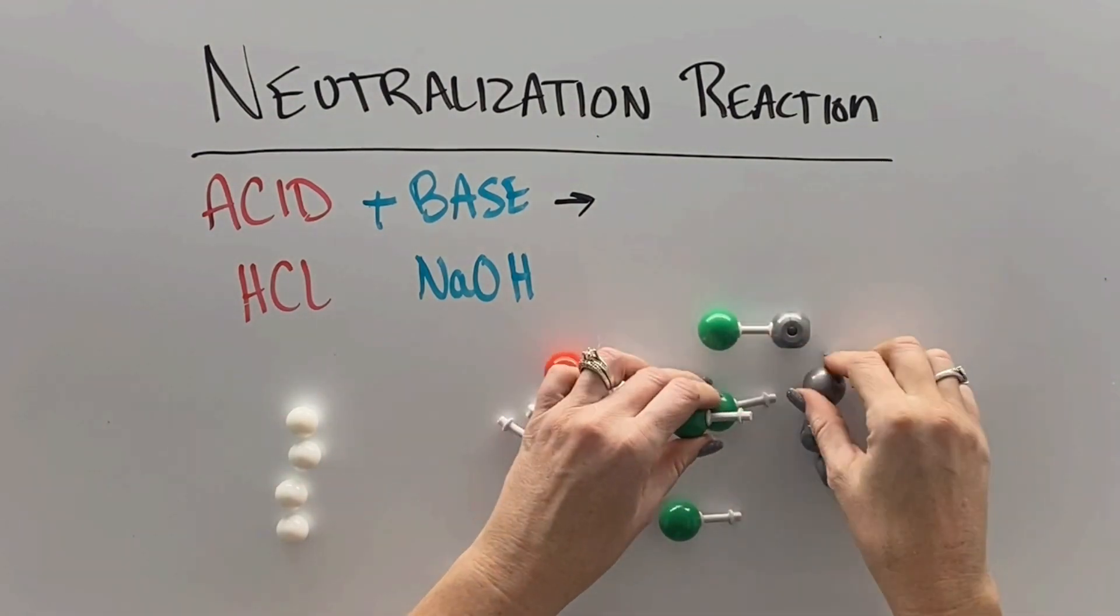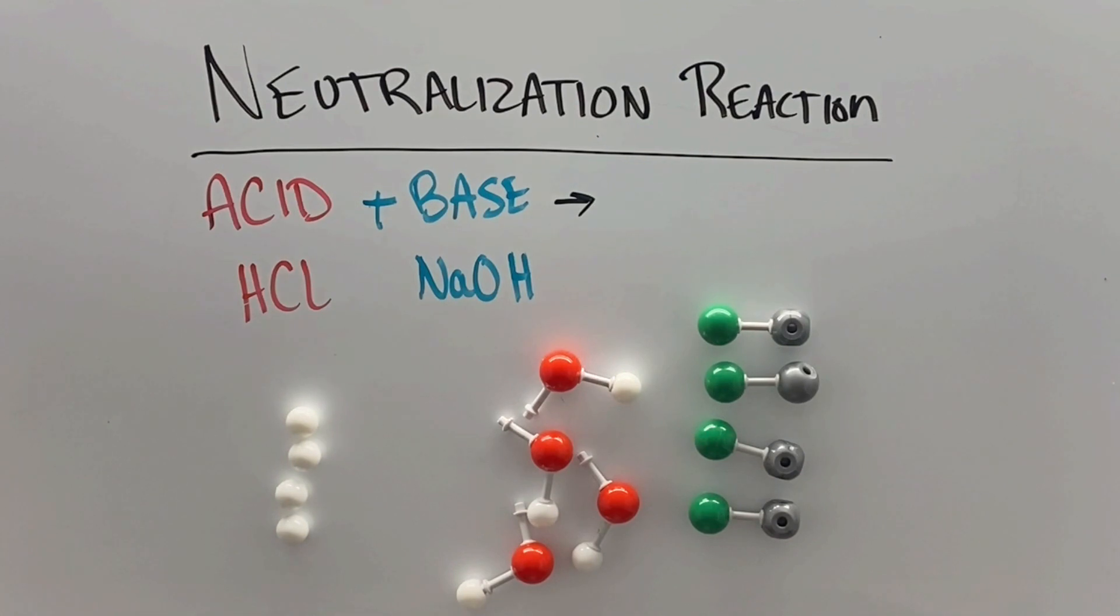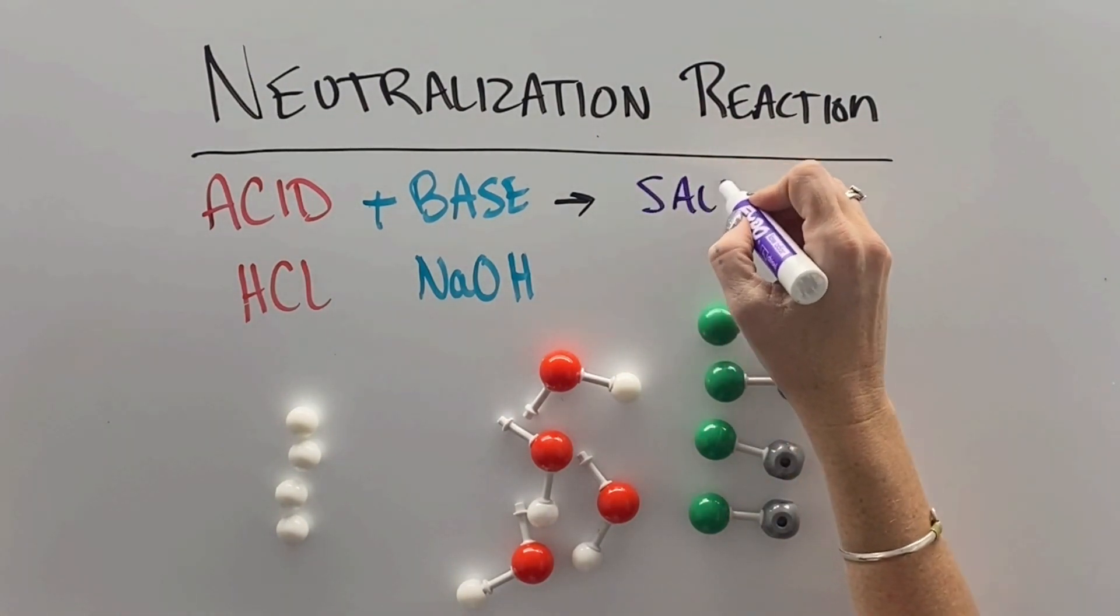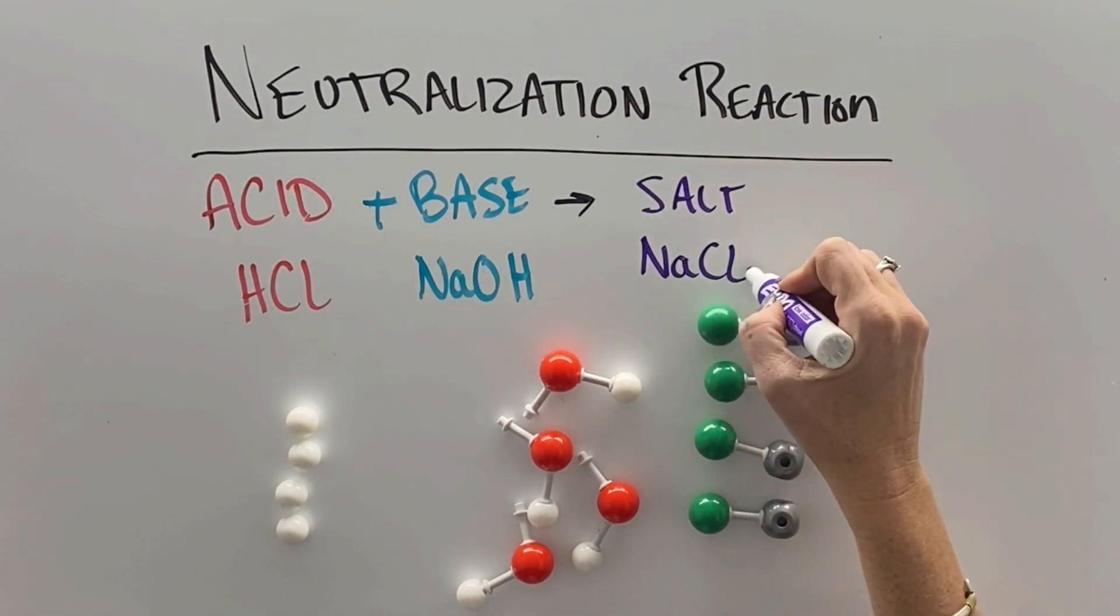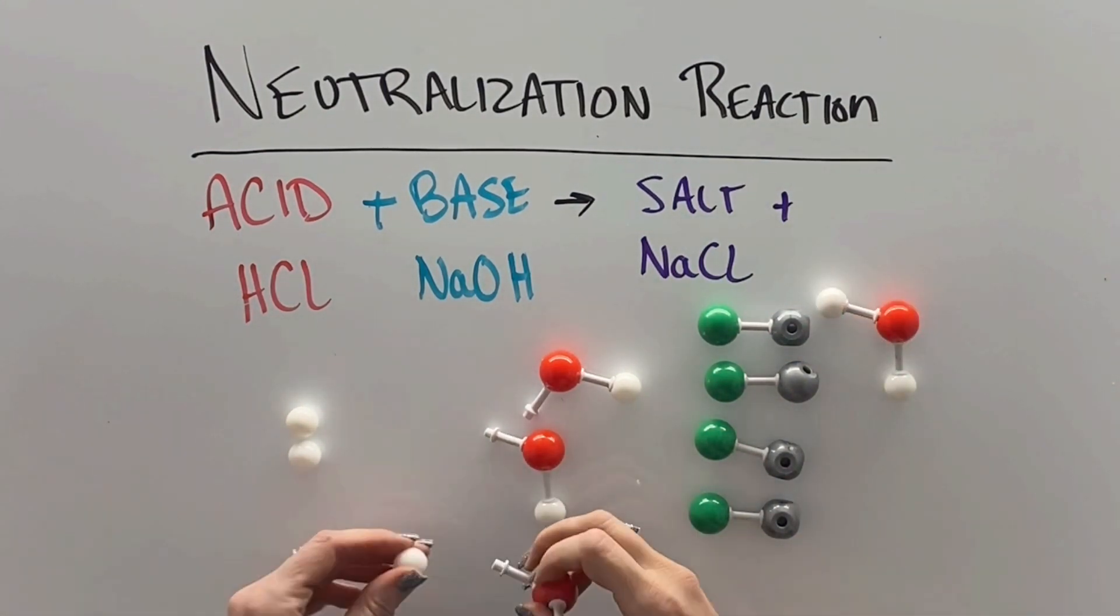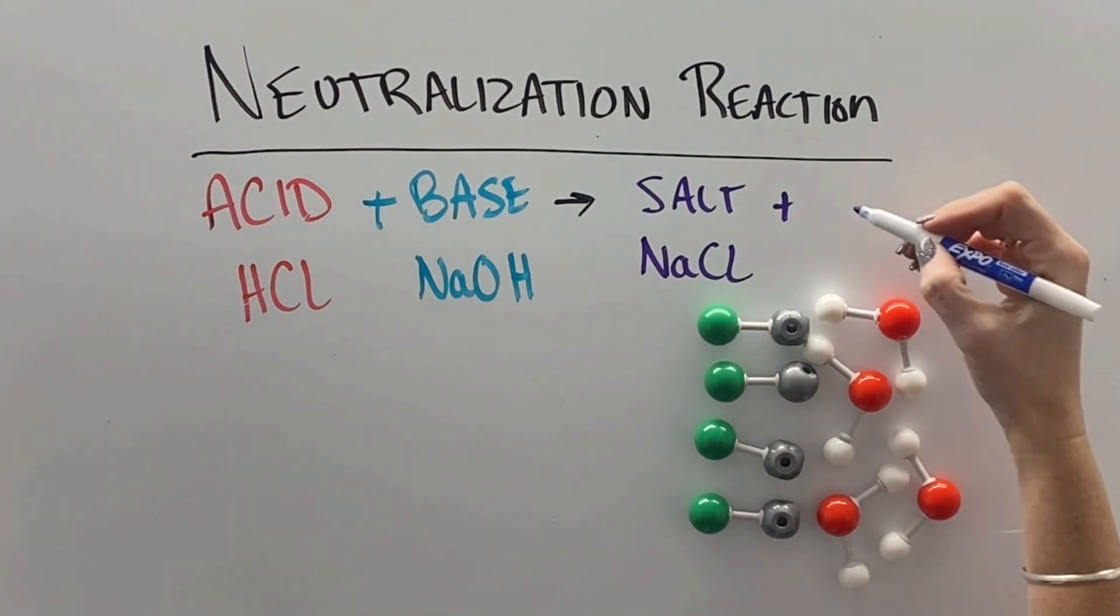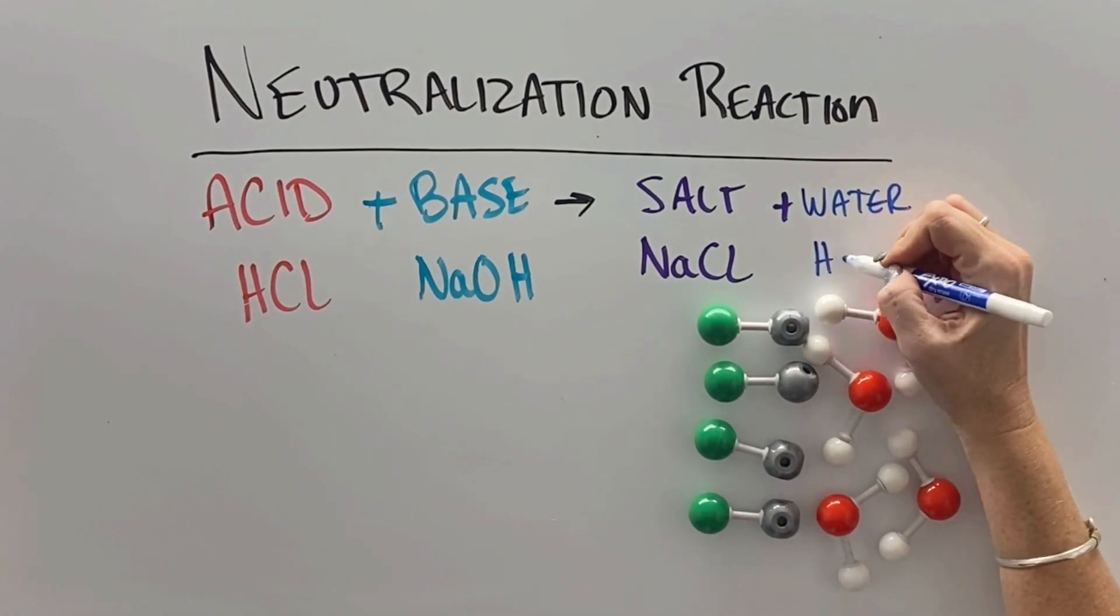The metal and non-metal attach to each other to form what scientifically is called a salt—in this case, literal table salt, sodium chloride. What's left over, the Hs and the OHs, make H2O, which is our good friend, water.